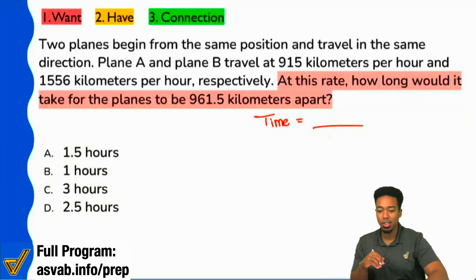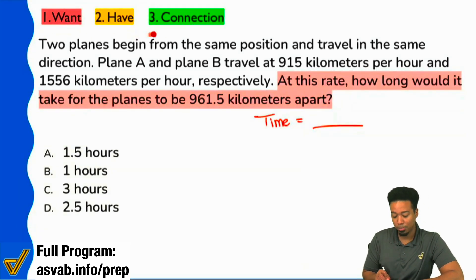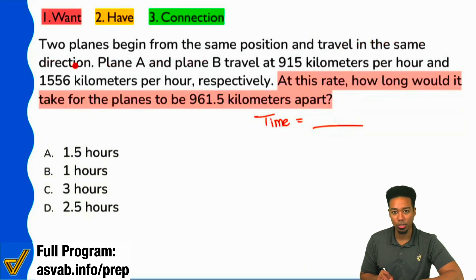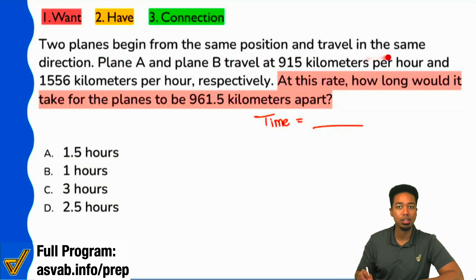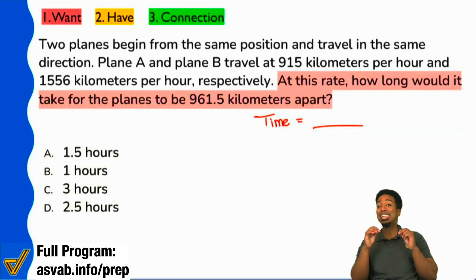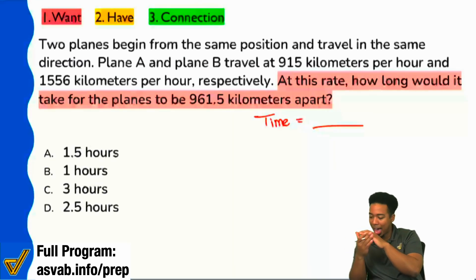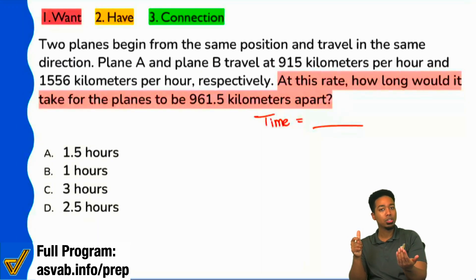Here we go. We see that it says two planes begin from the same position and travel in the same direction. Plane A and Plane B travel at this many kilometers per hour and that many kilometers per hour, respectively. Notice that I did not read those numbers — they're not that important. The context around them is absolutely important, way more important than what the numbers actually are.